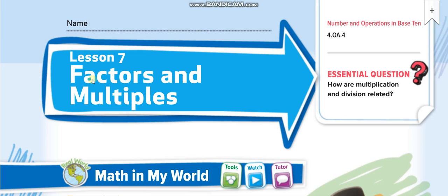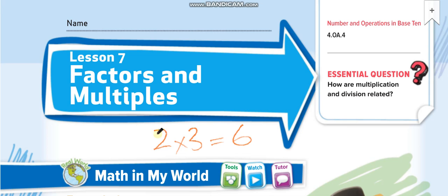Today we will talk about two things: factors and multiples. Factors means when you multiply two numbers — let's say 2 times 3 equals 6 — the answer of multiplication is called the product. The two numbers we multiply are known as factors.